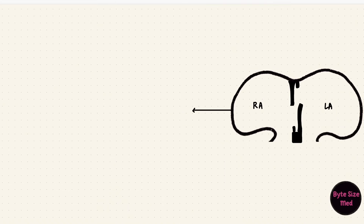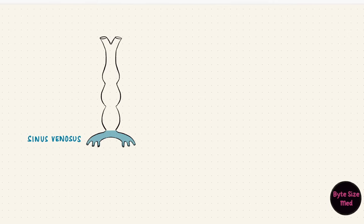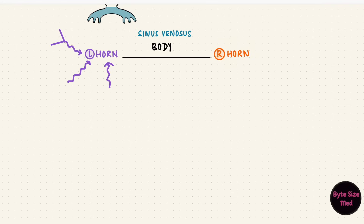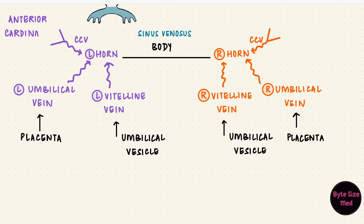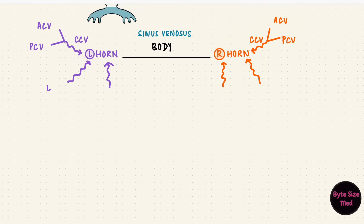The right atrium has a rough part and a smooth part. The rough part develops from the primitive atrium, but the smooth posterior wall comes from the sinus venosus. The sinus venosus drains into the atrium. The body of the sinus venosus has two horns — a right horn and a left horn — and each horn receives blood from three veins: the vitelline veins, which bring blood from the umbilical vesicle; the umbilical veins, which bring blood from the placenta; and the common cardinal veins, formed by the anterior and posterior cardinal veins, which bring blood from the body. There are two sets — one on the right, one on the left.